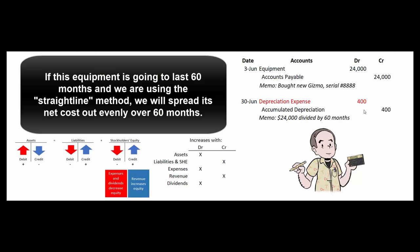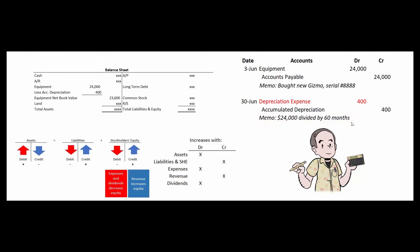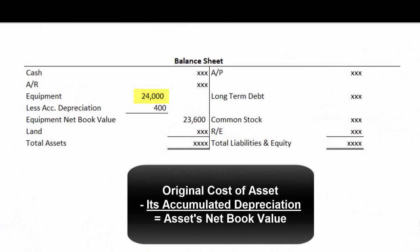We debit depreciation expense for $400 and credit accumulated depreciation for $400. And in the memo section we might want to show exactly how we came up with that $400 number. And then when we show the world our balance sheet, we will show the net book value of our equipment which would be the $24,000 that we paid minus the accumulated depreciation of $400. So our equipment would have a net book value of $23,600.